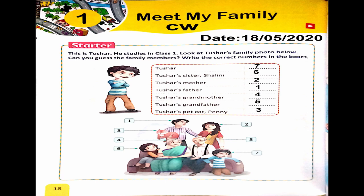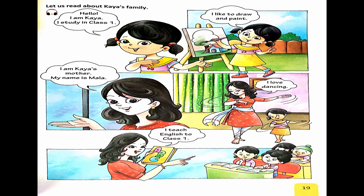Tushar's grandfather is number 5 — write number 5. Last is Tushar's pet cat Penny. Tushar's father is holding the cat, so the cat's number is 3 — write 3. Let's read out the numbers once: 7, 6, 2, 1, 4, 5, 3. Wonderful!